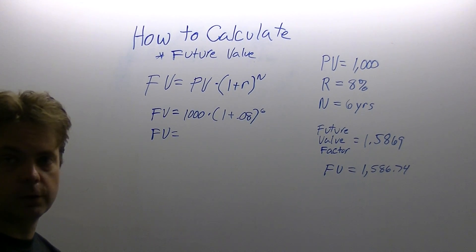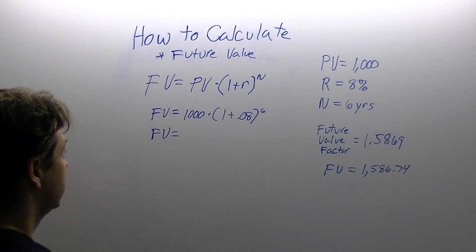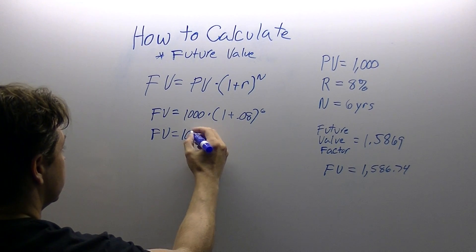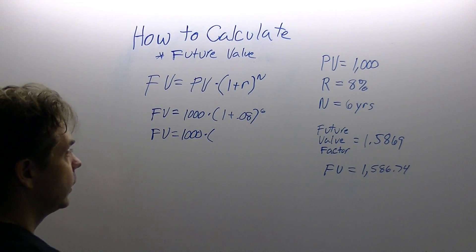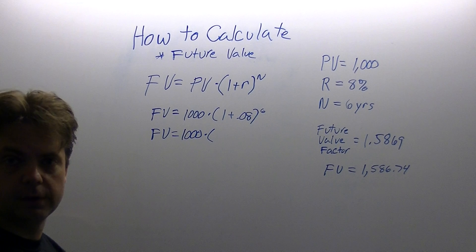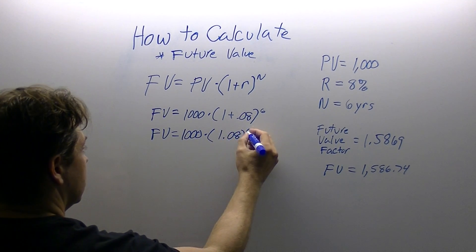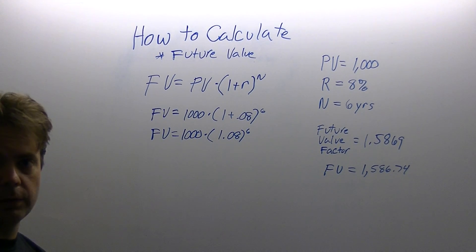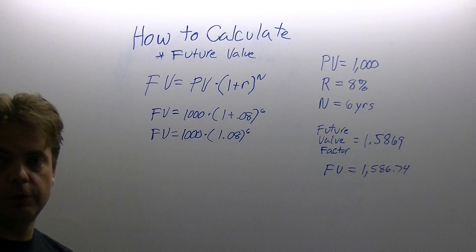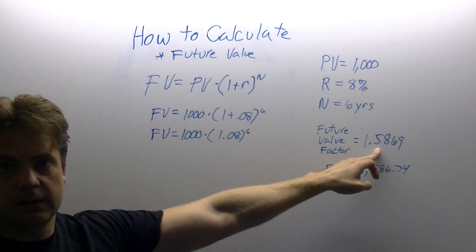Now we are going to start doing our order of operations. Order of operations tells us we need to start inside our parenthesis. We drop the 1,000 and the multiplication, then do it inside our parenthesis: 1 plus 0.08 is 1.08. Next, for our order of operations, we are going to raise 1.08 to the 6th power. When we do that we are going to get 1.5869.